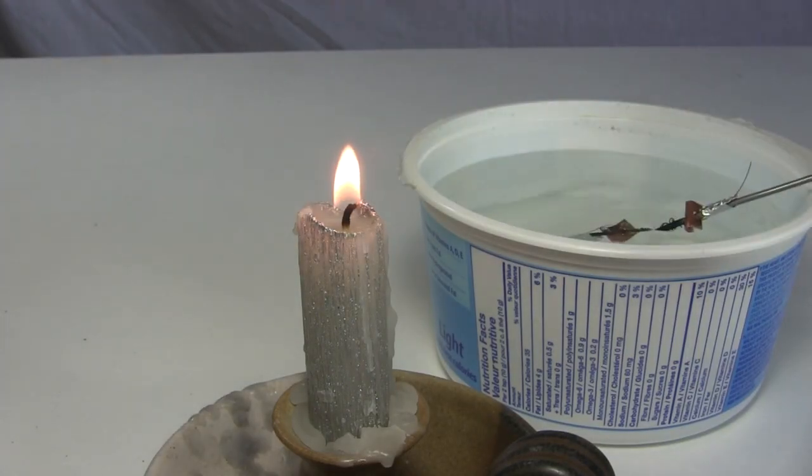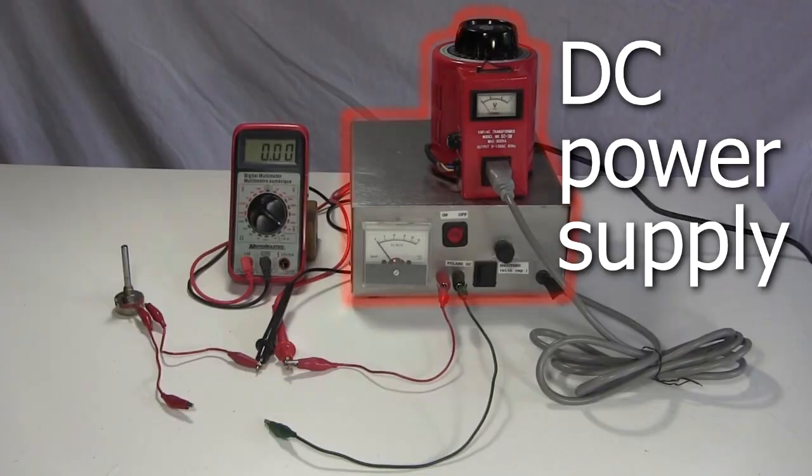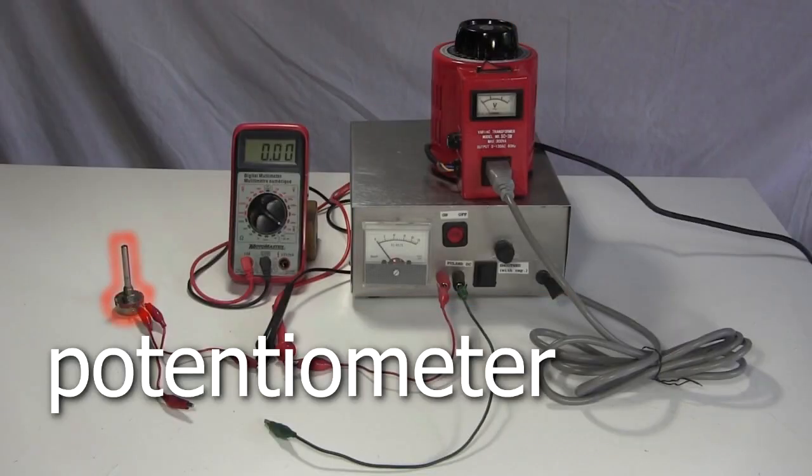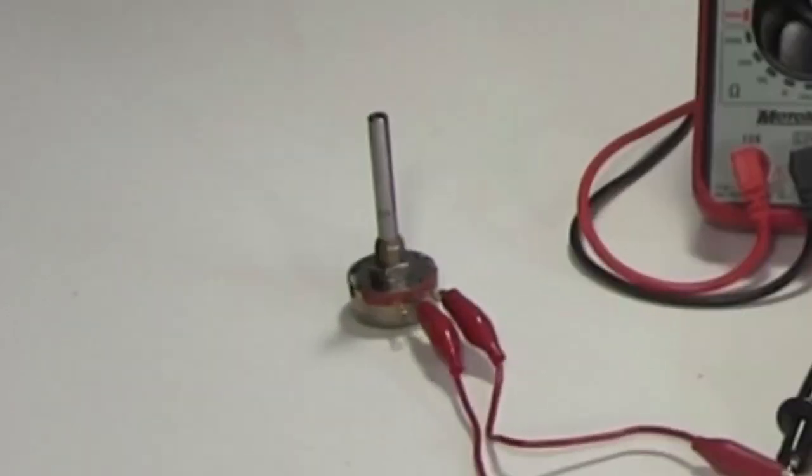My test setup is my homemade DC power supply, along with a potentiometer or variable resistor, and a meter to measure the current. The potentiometer is there to provide whatever resistance is needed to keep the current low.